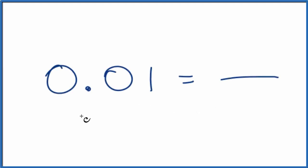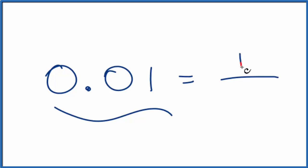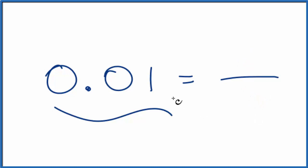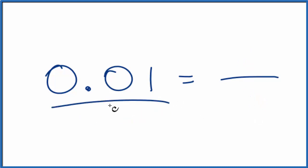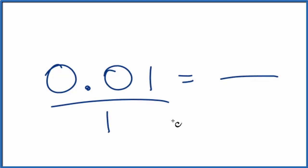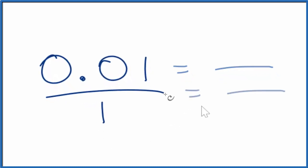Let's convert 0.01 to a fraction. We want to have a whole number numerator and a whole number denominator. Here's how we do that. First off, let's think about 0.01 as just 0.01 over 1. That kind of gets us started with a fraction.